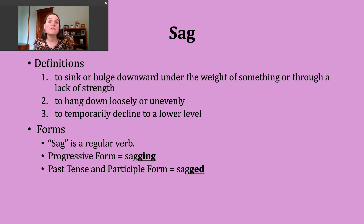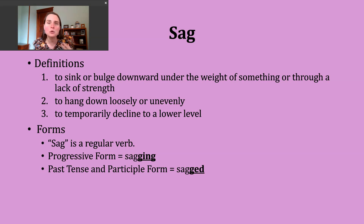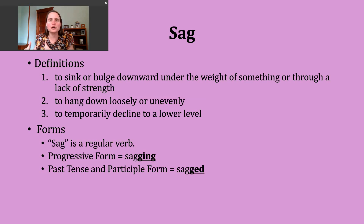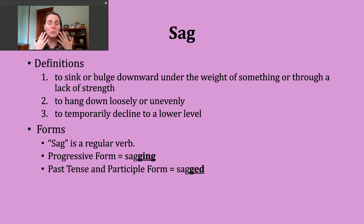A second way the verb sag gets used is to mean to hang down loosely or unevenly. Sometimes our clothes might do this — they hang down in a loose or uneven way. For some people, this might bring to mind tall socks that you pull up towards your knee, but as you're walking, they start to hang loosely or unevenly. We might say the socks are sagging. Sometimes people also use this verb to describe their skin, especially as we age.